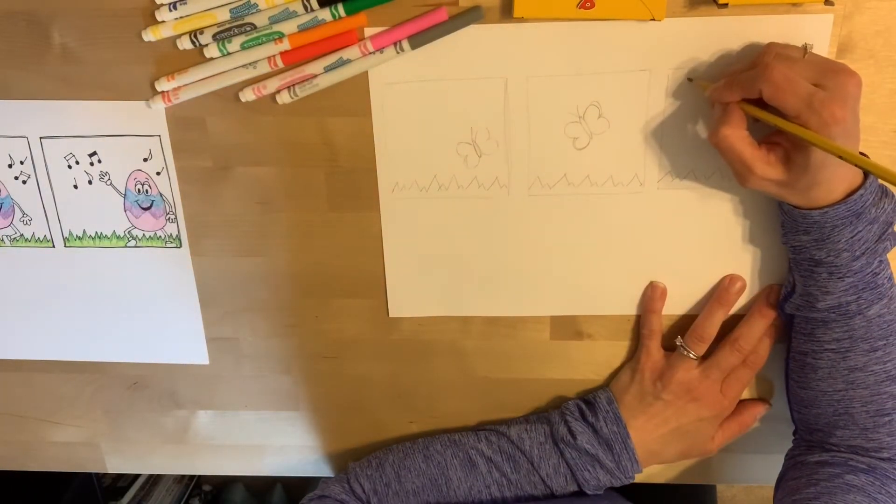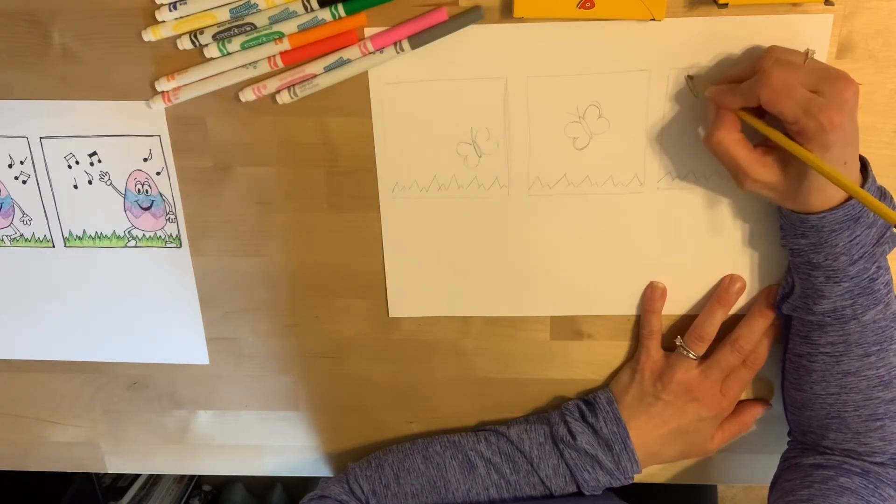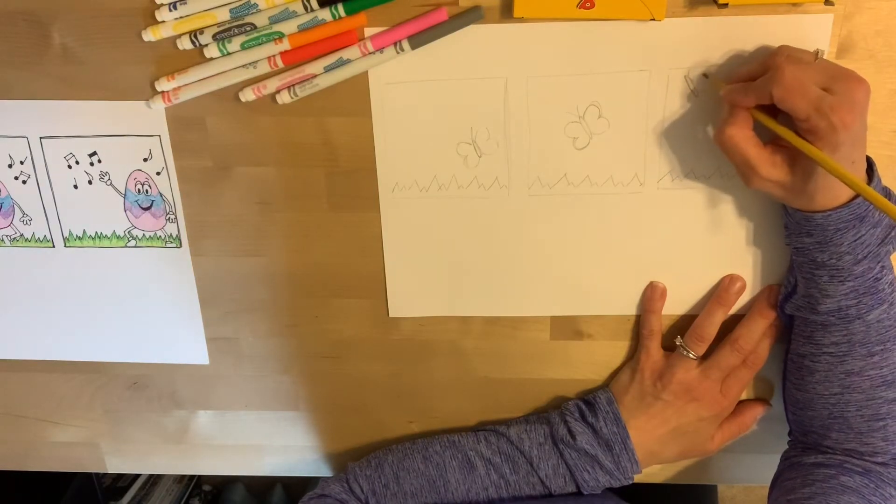And now for the third one, the butterfly is moving right off the top of the paper, right off the top of that block right there, on top of that frame.